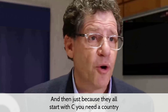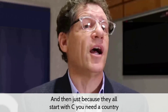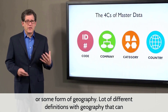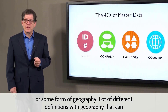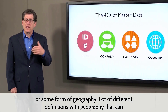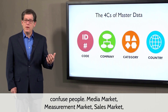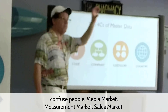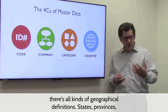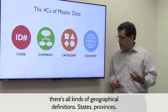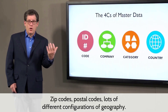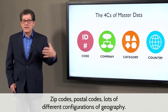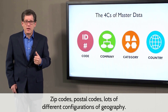And just because they all start with C, you need a country or some form of geography. There are a lot of different definitions with geography that can confuse people — media markets, measurement markets, sales markets. There's all kinds of geographical definitions: dates, provinces, zip codes, postal codes, lots of different configurations of geography.